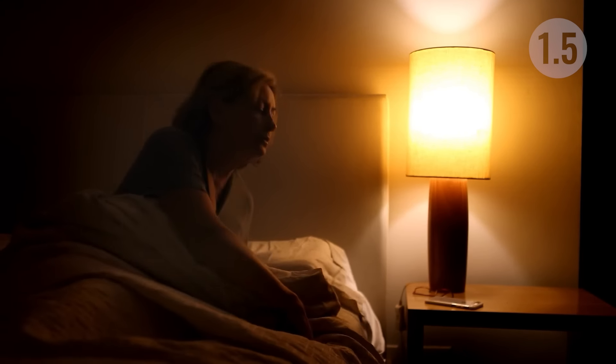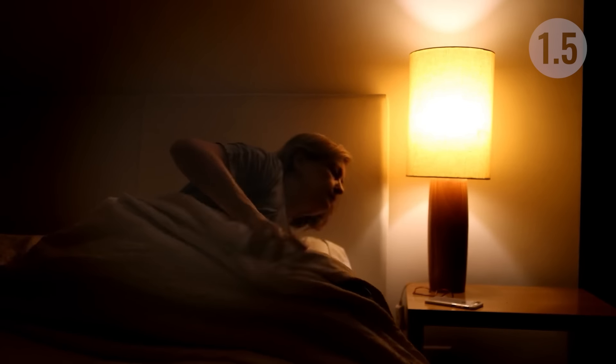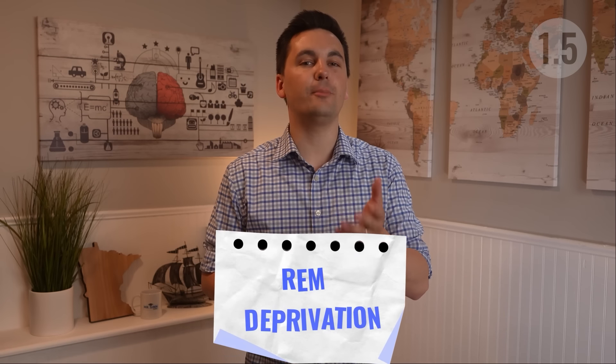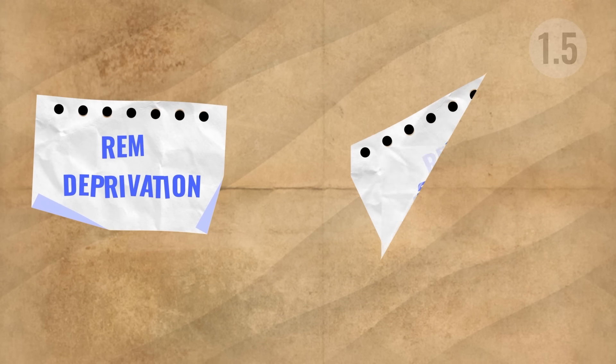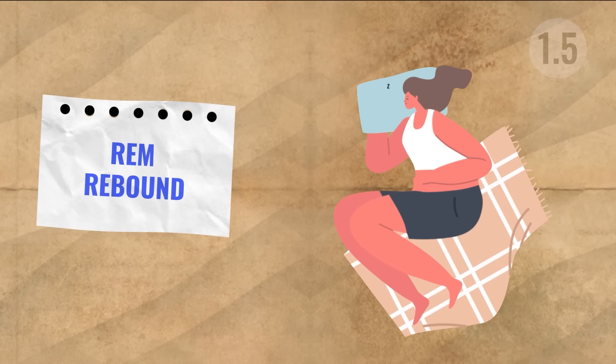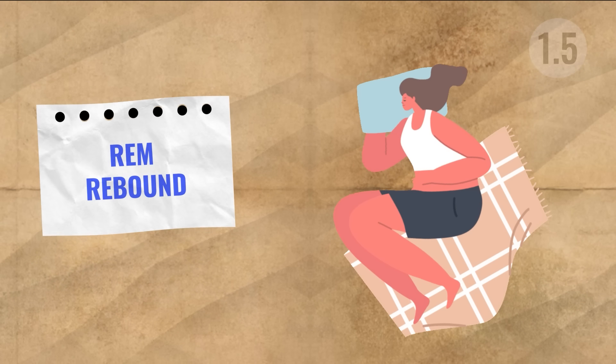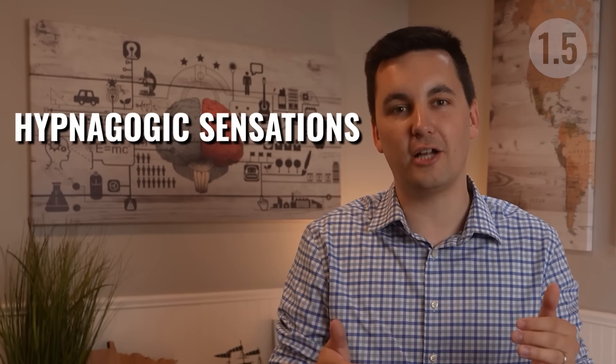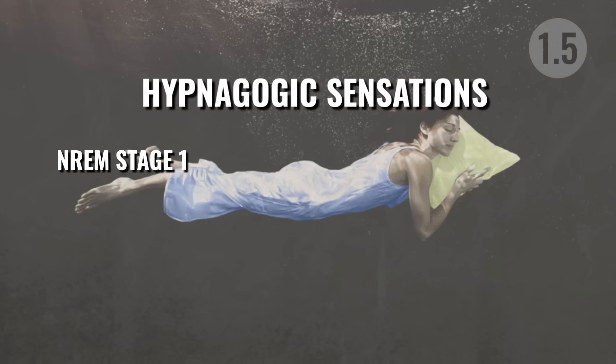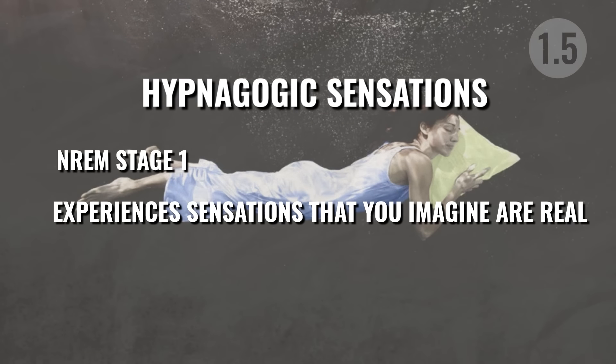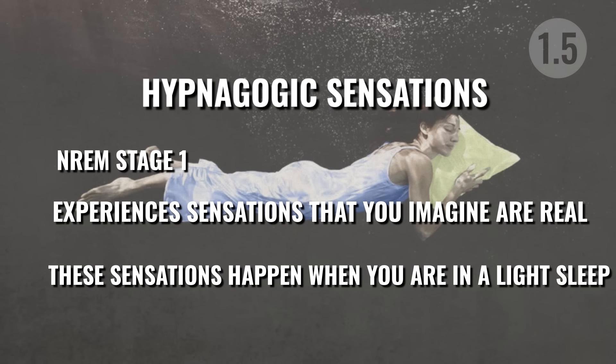As the sleep cycle progresses, periods of REM become longer and more frequent. If an individual is deprived of REM sleep, they will experience REM rebound — the next time they sleep, they will enter REM more quickly and spend more time in it to make up for the lost sleep. Before moving to dreams, I want to highlight hypnagogic sensations, which occur during non-REM Stage 1. These are sensations that an individual imagines are real during light sleep — for example, feeling like you are falling in a dream and waking up suddenly.